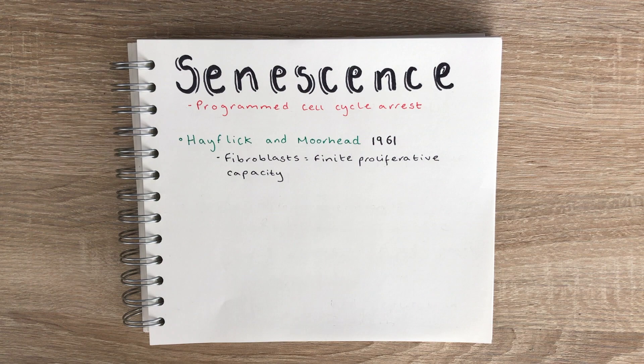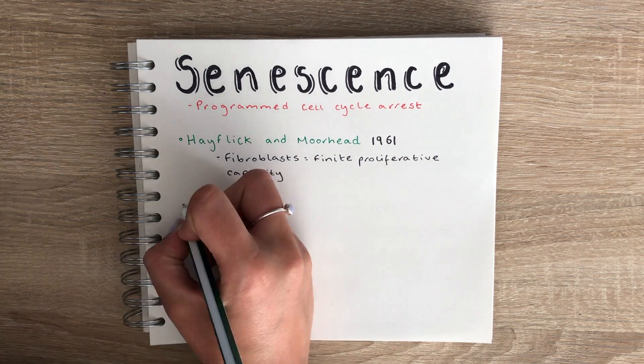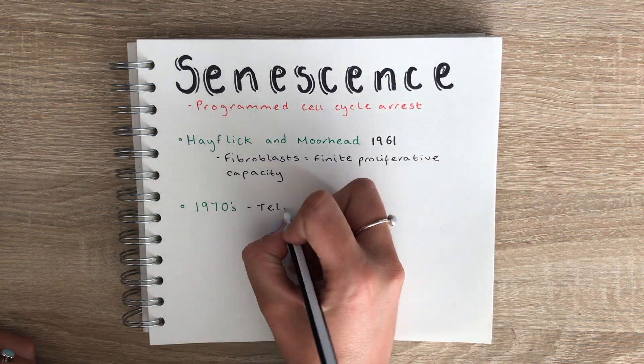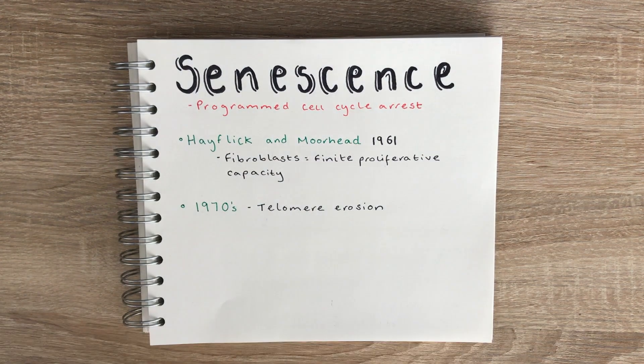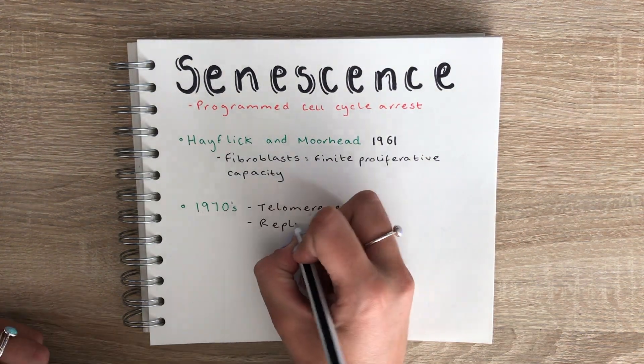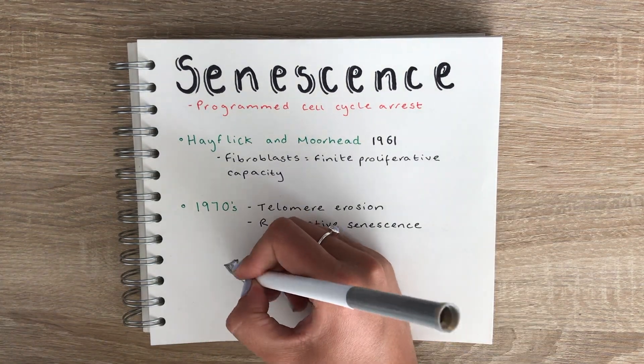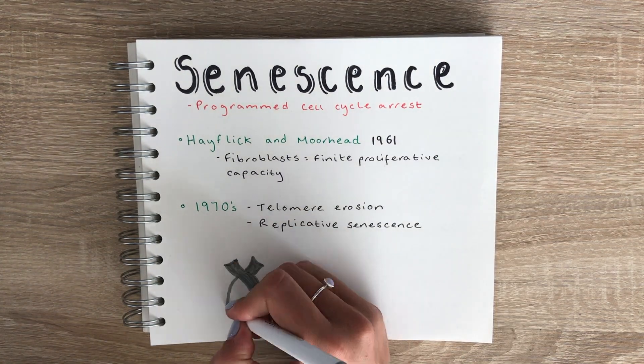The reason for this sudden cell cycle arrest wasn't discovered until 1970, and it was found to be due to telomere dysfunction. This type of senescence is known as replicative senescence.